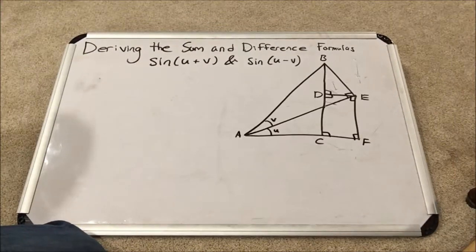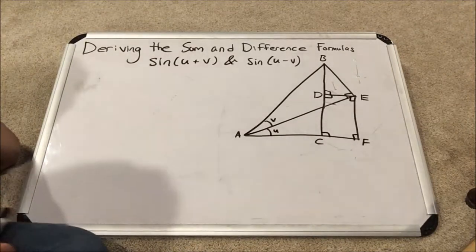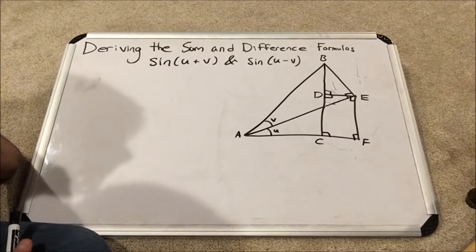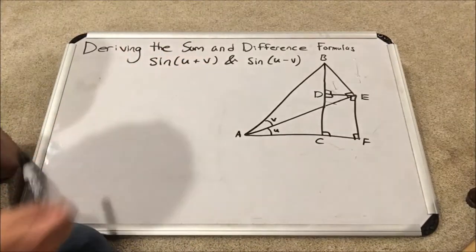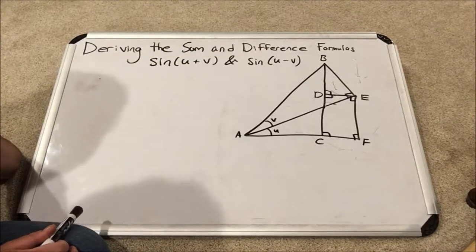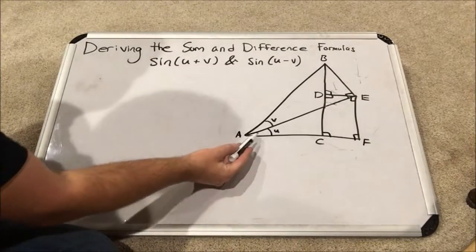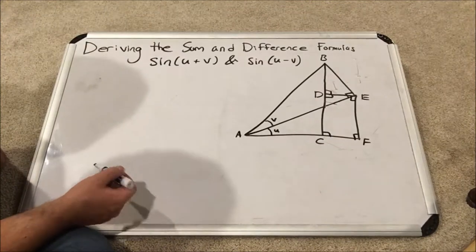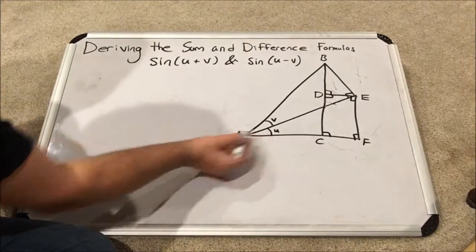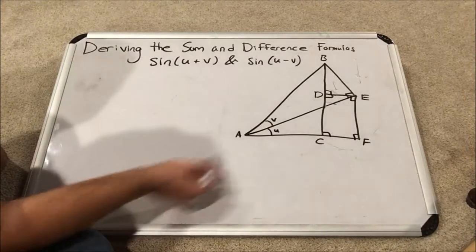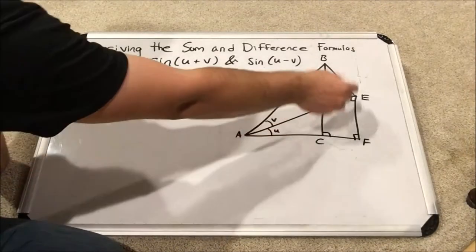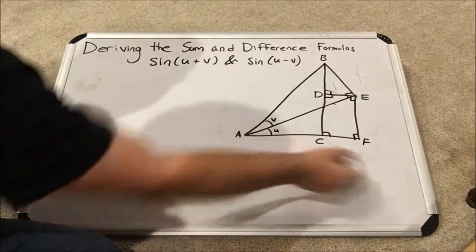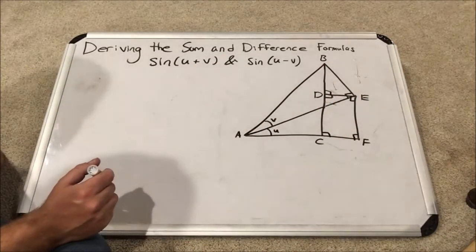So here we have this, what seems like a very wacky set of right triangles and other geometric shapes. And this is what we're going to use to derive the sine of u plus v formula. Notice these two angles here. I've created two right triangles with each of them. The bottom one is angle u and the top one is angle v. It's as if the triangle AEB was sat right on top of the hypotenuse of triangle AFE. And that's exactly how we've set it up.